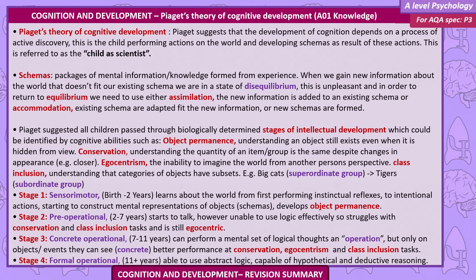Stage three: Concrete operational, seven to eleven years. Can perform a mental set of logical thoughts and operations, but only on objects and events they can see — concrete. Better performance at conservation, egocentrism, and class inclusion tasks. Stage four: Formal operational, eleven plus years. Able to understand abstract logic and is capable of hypothetical and deductive reasoning.